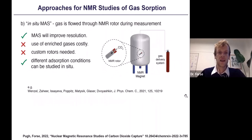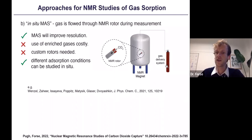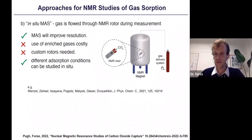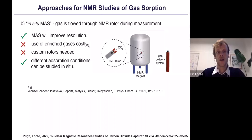The second approach, in situ MAS, is seen very rarely in the literature but there's one nice recent study. Here gas is actually flowed into the probe and through the rotor via a hole, with a gas release out of the rotor, so measurements are done under gas flow. MAS still gives good resolution, and this is a nice measurement because we're studying adsorption as it happens — we can see intermediate formation, kinetics, and readily vary the gas being flowed. Downsides are that flowing gas makes enriched isotopes expensive, and you need custom rotors with holes.